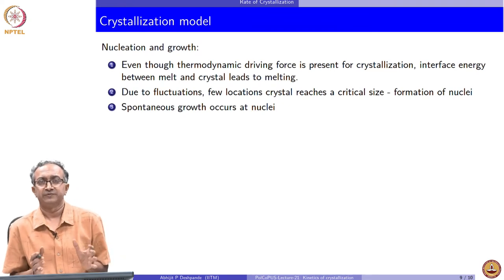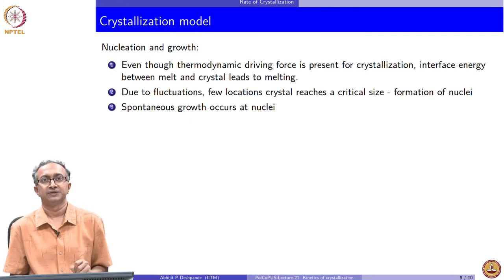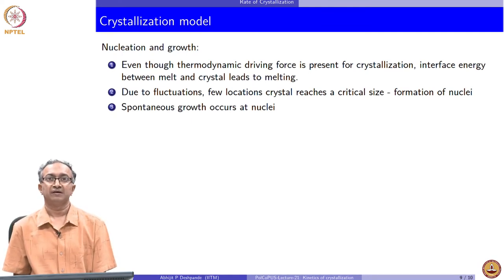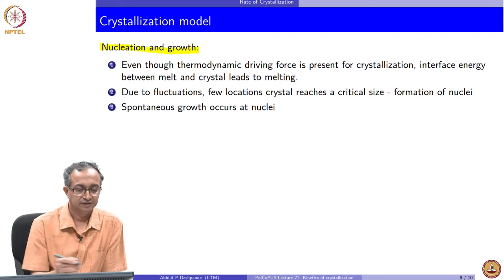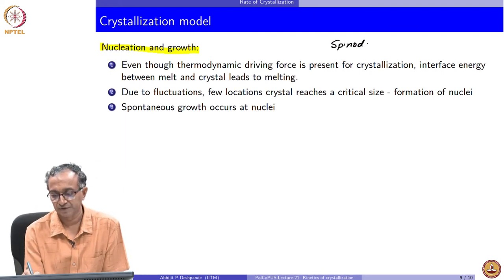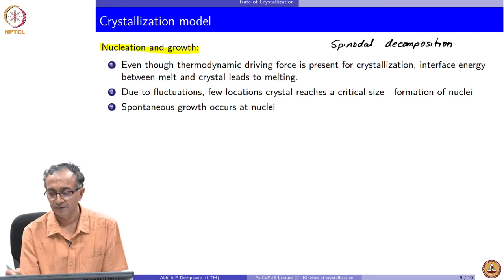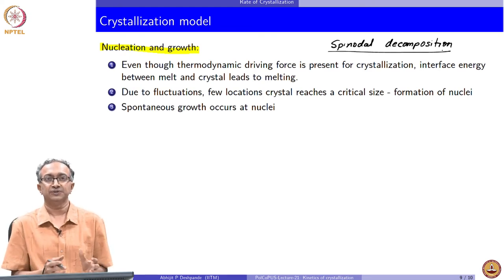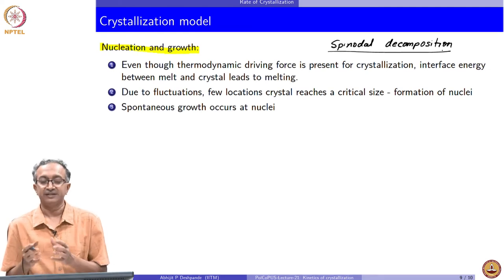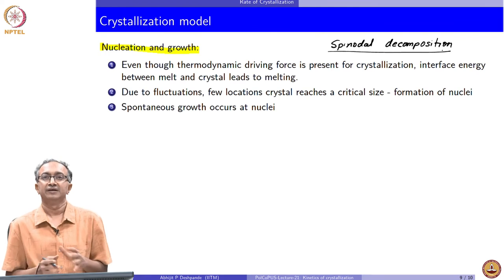Let us look at a simple set of models. To do this, we quickly recap the picture of crystallization: crystallization happens where a few nuclei form and then growth happens. There is also another mechanism of crystallization important for some material systems, which we will discuss when we look at polymer blends. These represent two different mechanisms of phase transformations in thermodynamics: nucleation and growth, where nuclei form in some places and then growth occurs.